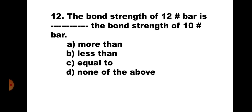Question 12. The bond strength of a 12 tor bar is __ the bond strength of a 10 tor bar. A. More than, B. Less than, C. Equal to, D. None of the above. Bond strength decreases as the diameter of the bar increases. Hence, the bond strength of the 12 tor bar will be less than that of the 10 tor bar. The correct answer is B. Less than.